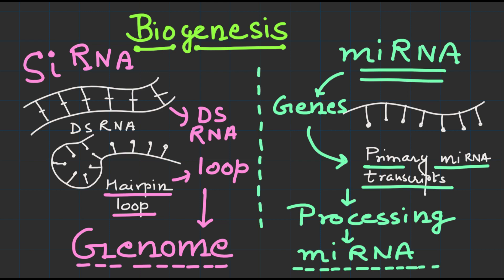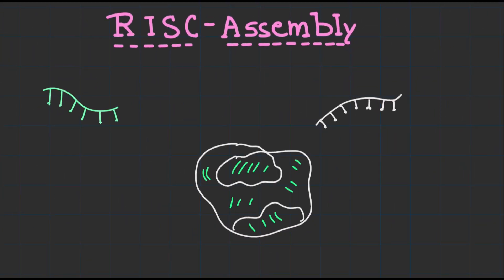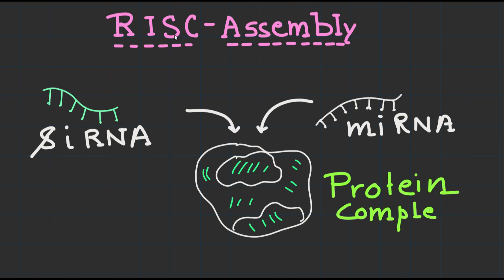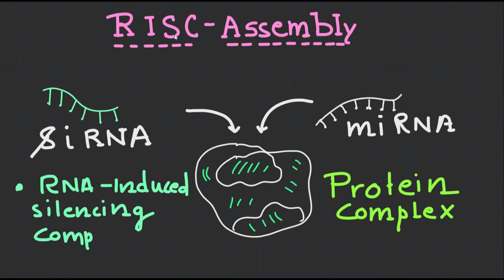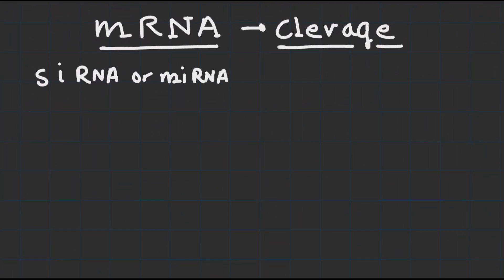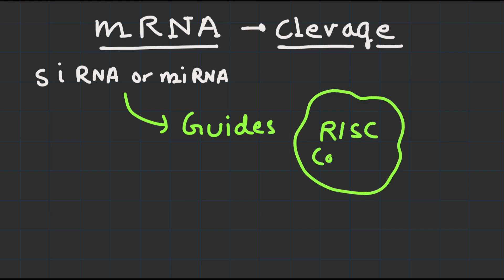Both siRNAs and miRNAs are incorporated into a protein silencing complex called the RNA-induced silencing complex, or RISC. RISC consists of proteins that guide the siRNA or miRNA to the target mRNA molecule. The siRNA or miRNA guides the RISC to recognize complementary sequences on the target mRNA molecule.